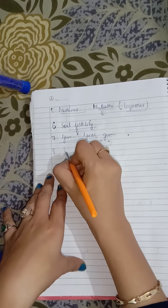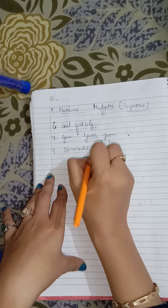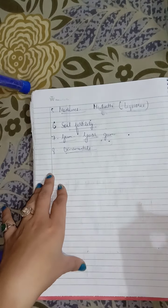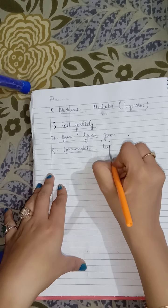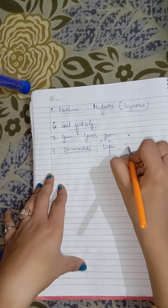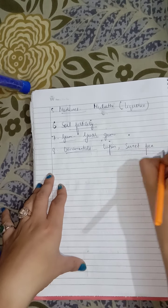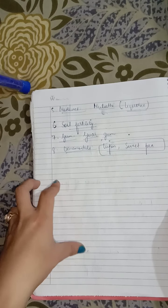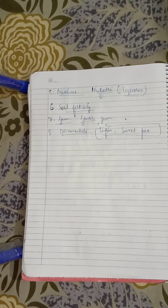The last importance is ornamentals — plants grown for decoration. We also grow members of this family as ornamentals, like lupin and sweet pea. So this completes our full description of the family, and with this, your chapter on morphology of flowering plants is also complete.